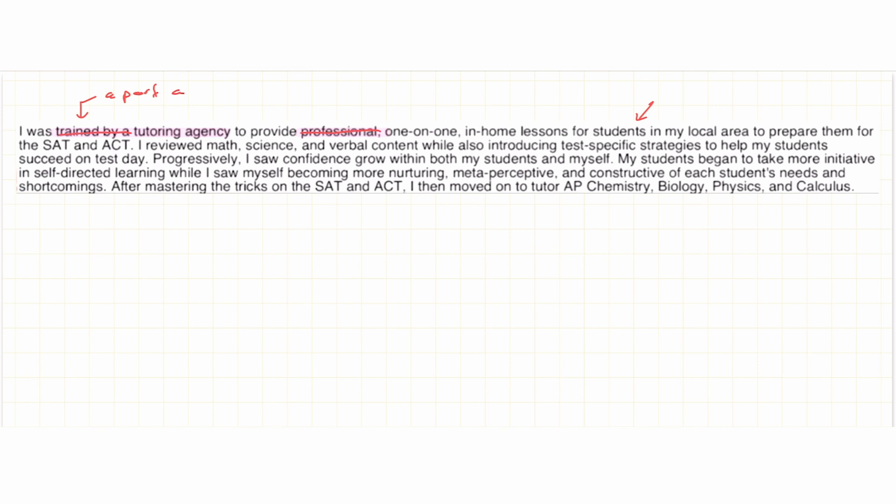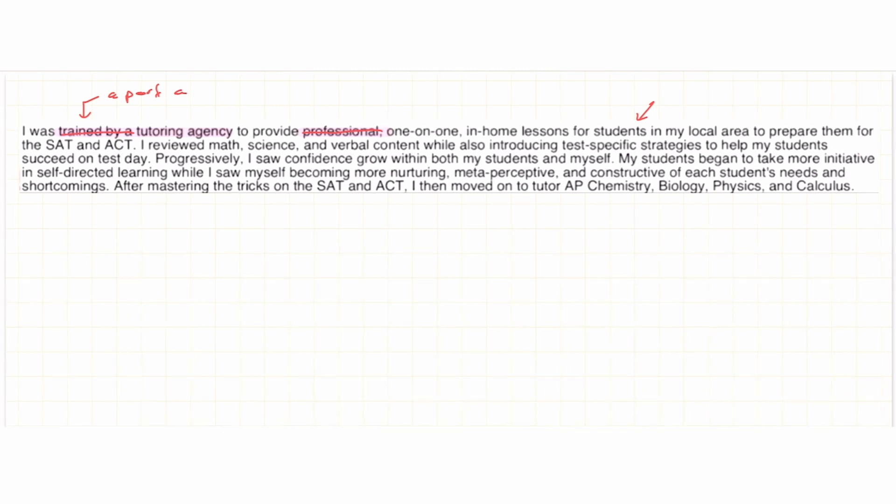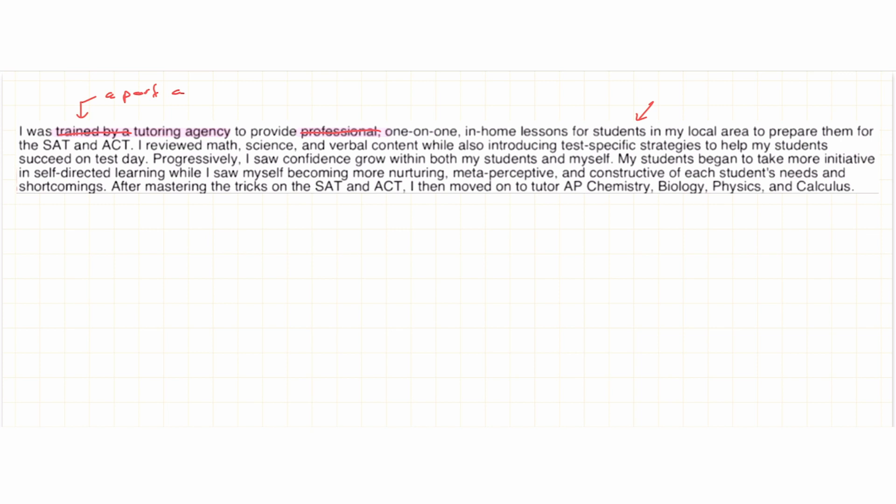I reviewed math, science, and verbal content while also introducing test-specific strategies to help my students succeed on test day. Okay, so the first and second sentence are about what they did in their role. So I'm going to combine sentence one and two and ask the question, so what? Why does what they are doing here matter and how does it help shape them as a person? One of their contribution is introducing test-specific strategies. Now, I am guessing that these are test-specific strategies that were told to them as a part of their training. I'm going to ask myself, so what? Let's see if we can answer this question after we read the rest of the essay.